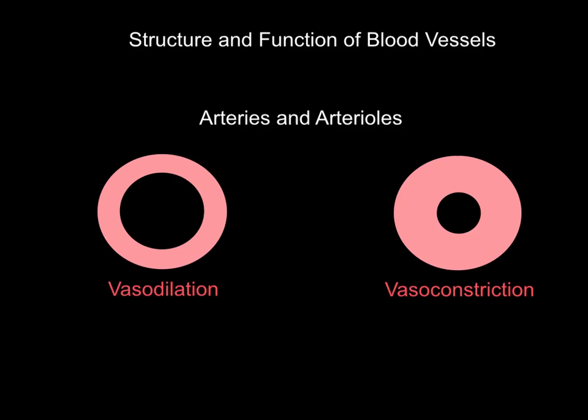Welcome to this video on structure and function of blood vessels. There are three general types of blood vessels in our bodies: arteries and arterioles — arterioles are basically smaller versions of arteries — veins and venules, which are smaller versions of veins, and capillaries. We're going to look at each one at a time and go through the structure and function of each.